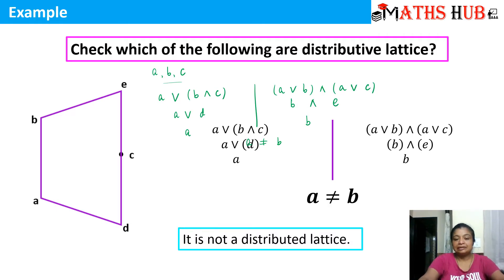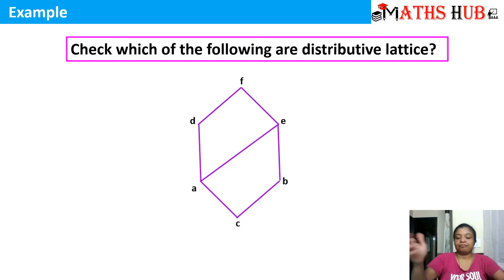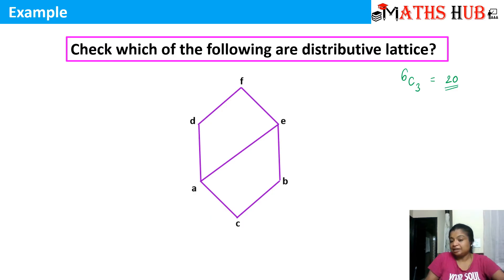Let's come to the third example. Now check the number of elements: 1, 2, 3, 4, 5, 6. So how many combinations will you get? 6C3 is 20. So if this lattice is distributive, we have to exhaust all 20 possibilities and check whether it satisfies the distributive law. You can see that it is a lengthy process and you may miss some pairs. So what is the shortcut method to check whether a lattice is distributive or not?